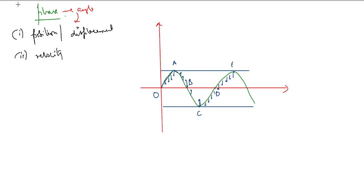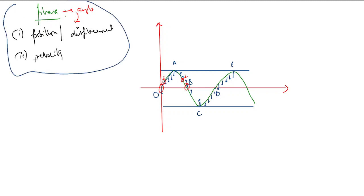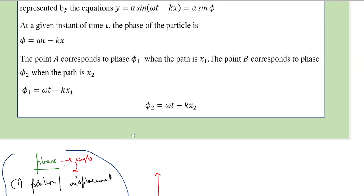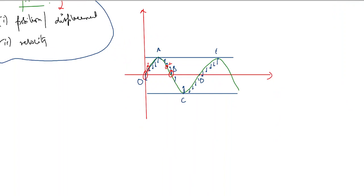If we want to find out the phase of a given particle, consider particle one and particle two. Even though they have the same displacement, they have different velocity directions. Particles at B and O, even though they have the same displacement, are different in that particle O is trying to go down and particle at B is trying to go up. This is called phase — it is an important factor to understand the wave's particle position and displacement.